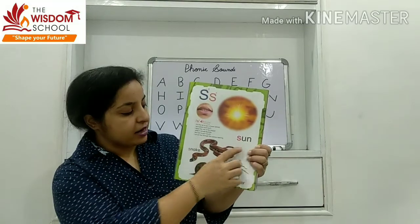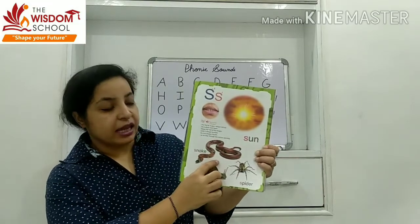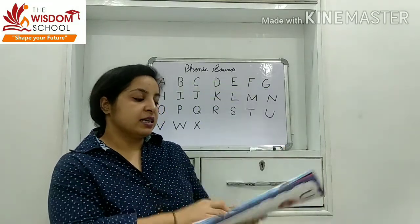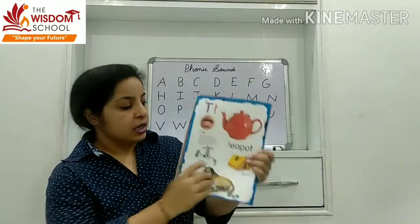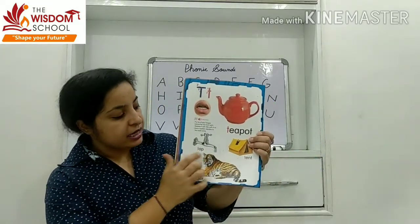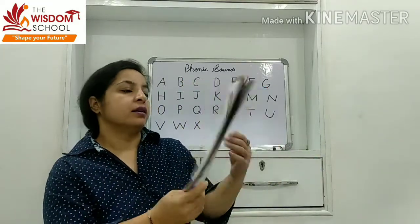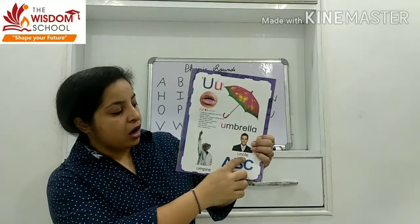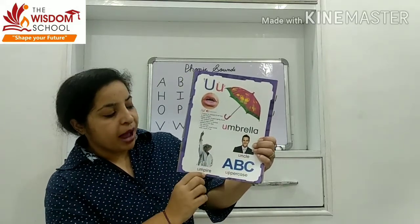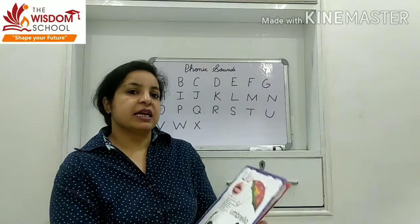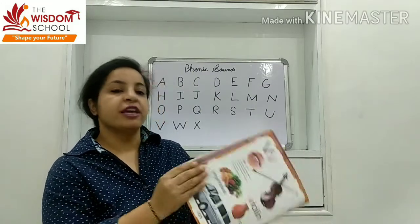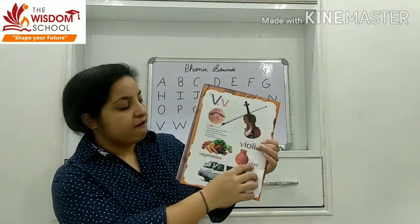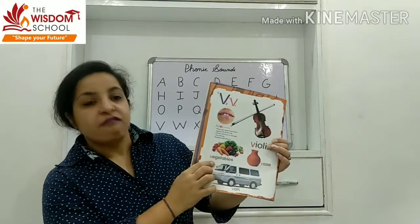S — sun, snake, spider, snail. T — 't', 'th' sound — teapot, tent, tap, tiger. U — umbrella, uncle, empire, uppercase. V — letter V — violin, vaas, vegetable.